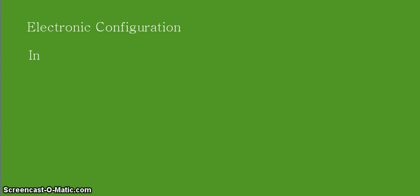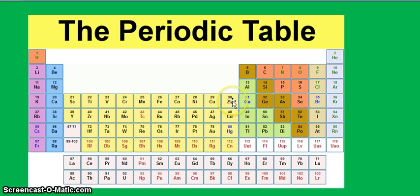So the first step will always start with determining the number of electrons that we need to distribute in our electronic configuration. So we need to look at our periodic table. We are now looking at our periodic table. We are looking for element indium and that is here. This is element indium and that is element number 49.